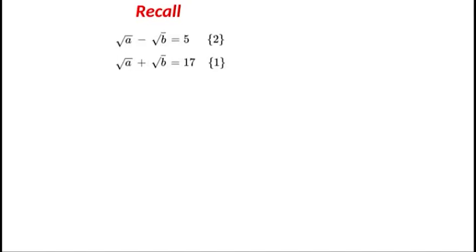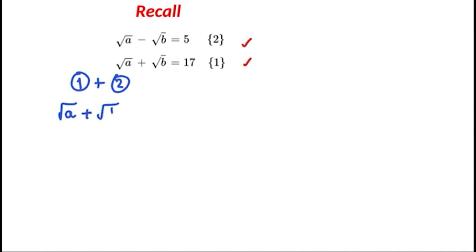Let's recall our two equations. Equation 1: the square root of a minus the square root of b is equal to 5. Equation 2: the square root of a plus the square root of b is equal to 17. Now we're going to add these two equations together — equation 1 plus equation 2. So we have the square root of a plus the square root of b, plus the square root of a minus the square root of b, is equal to 17 plus 5.